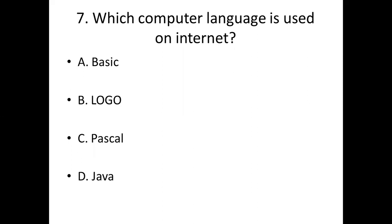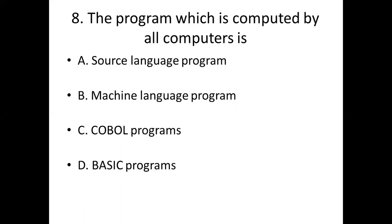Seventh bit: Which computer language is used on the internet? Option A: Basic. Option B: Logo. Option C: Pascal. Option D: Java. Answer: Option D, Java.